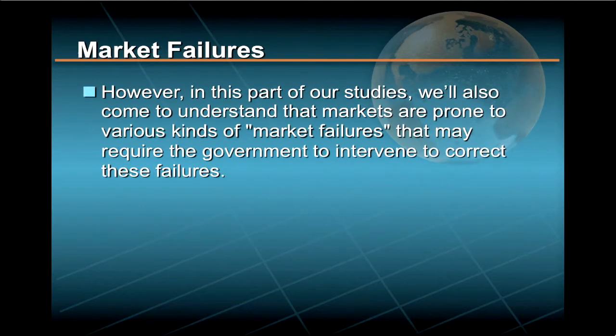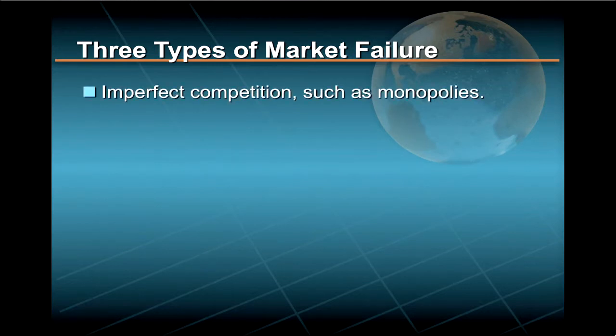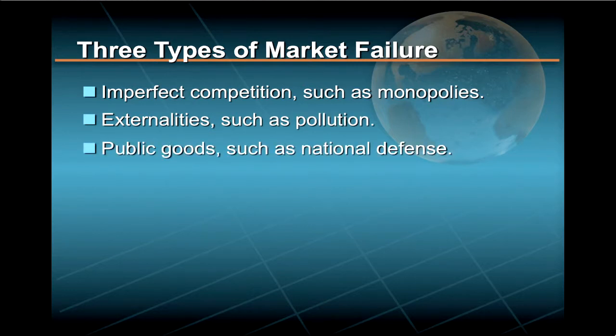However, in this part of our studies, we'll also come to understand that markets are prone to various kinds of market failures that may require the government to intervene to correct these failures. The three most important market failures involve imperfect competition, such as monopolies; externalities, such as pollution; and public goods, such as national defense.